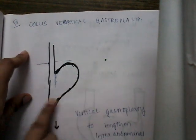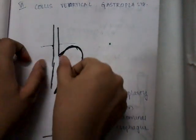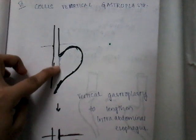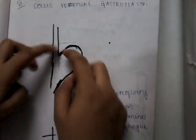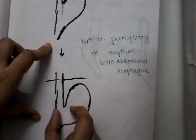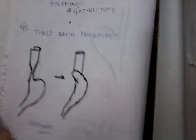The next surgery is Collis vertical gastroplasty. Here, if this is the stomach fundus and the esophagus, we give a vertical incision and then suture it separately, thus increasing the intra-abdominal part of the esophagus length. This is Collis vertical gastroplasty.